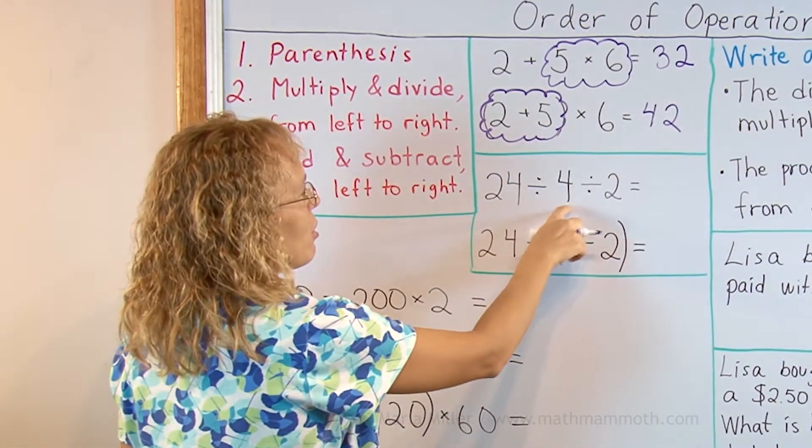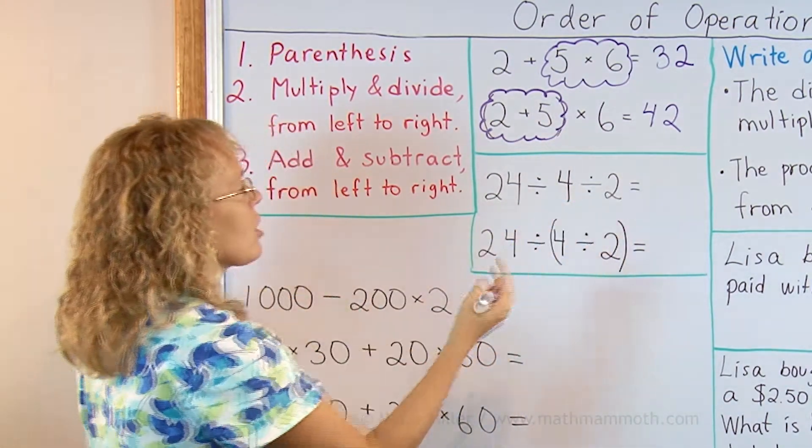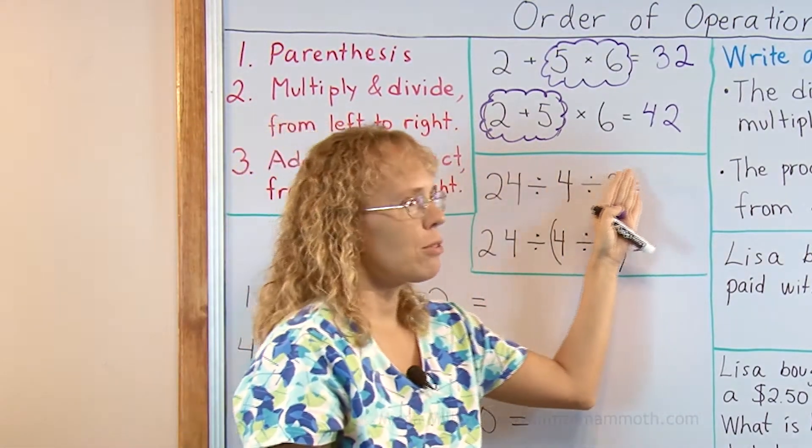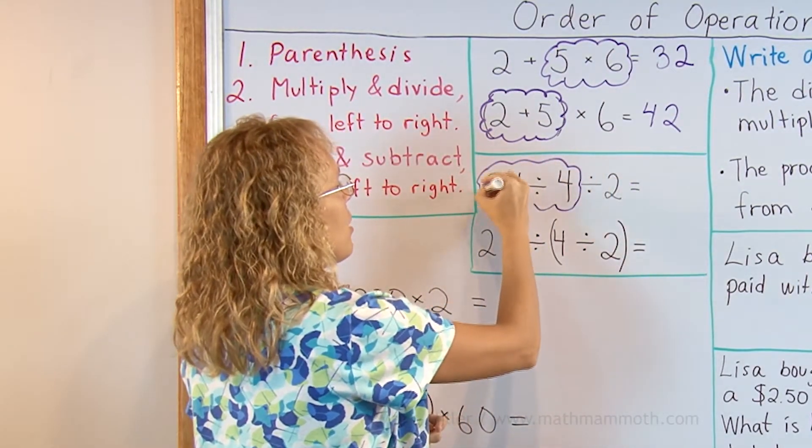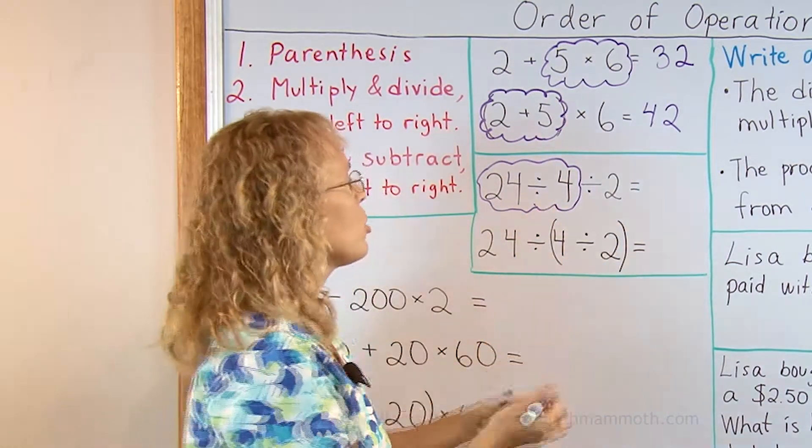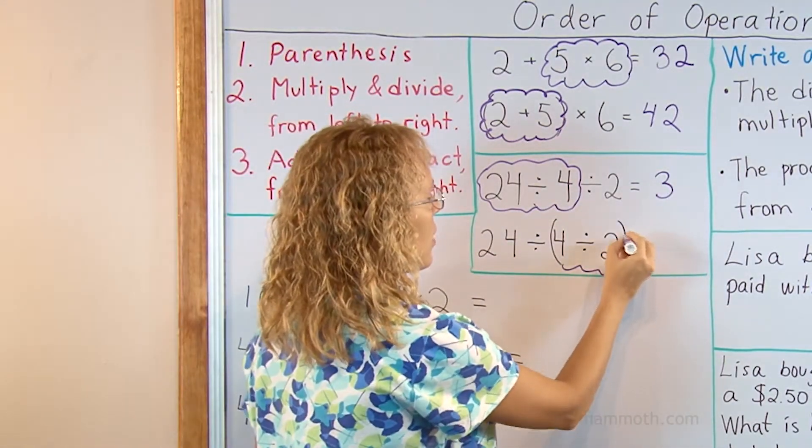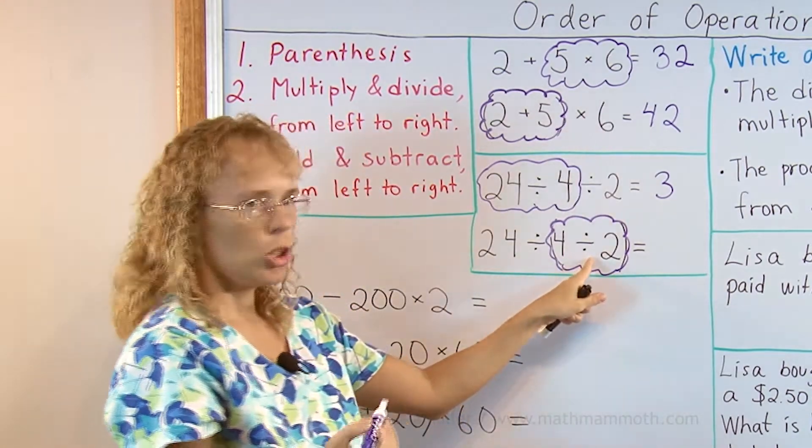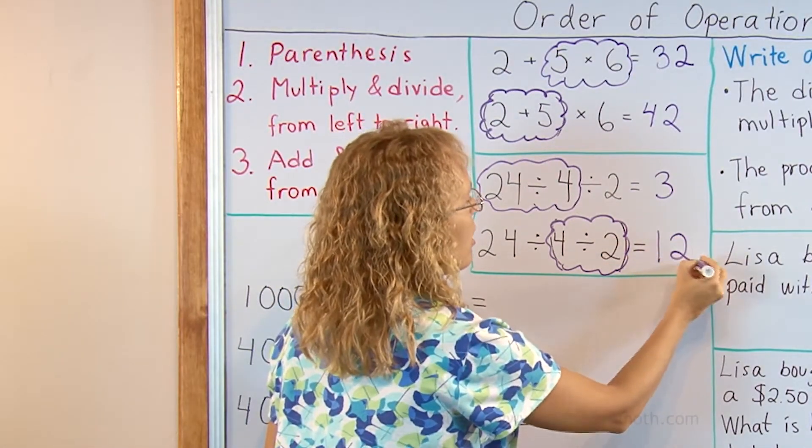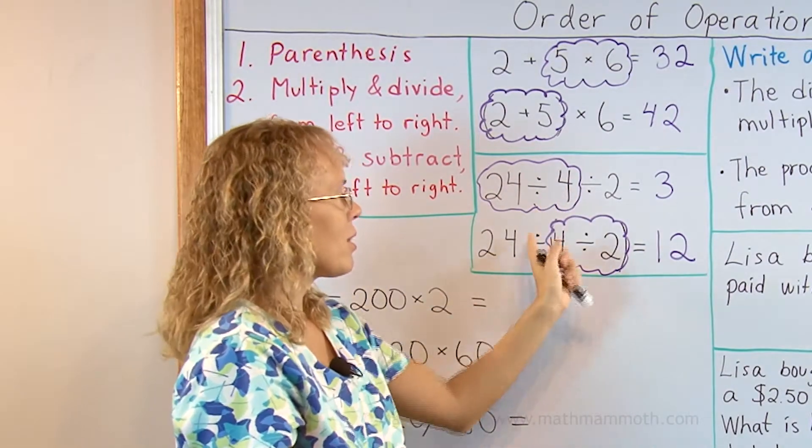Here's 24 divided by 4 divided by 2. In division, since there's two divisions we need to go from left to right. So start from this end and work your way through. This here is the operation to be done first. 24 divided by 4 is 6 and then 6 divided by 2 is 3. Here though we have parentheses again so this has to be done first. 4 divided by 2 is 2 and then 24 divided by 2 is 12. So the order really matters. We have totally different answers even though the numbers and the symbols were almost the same.